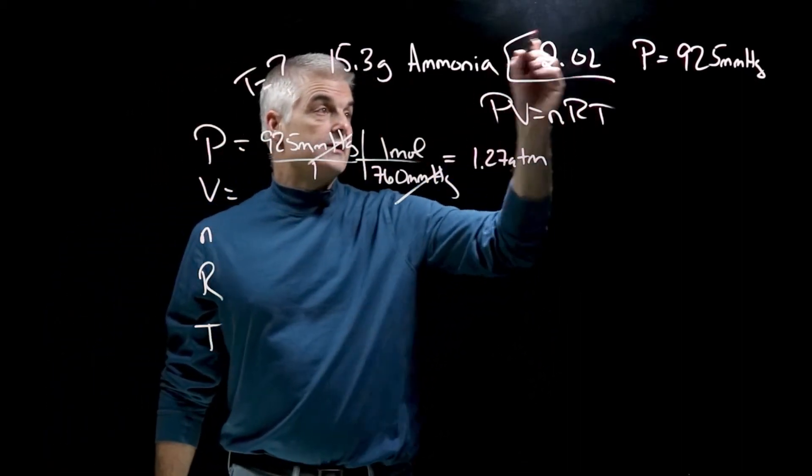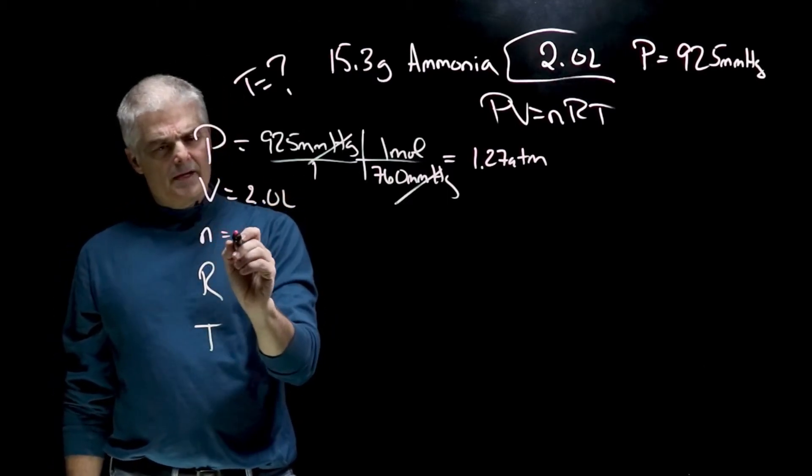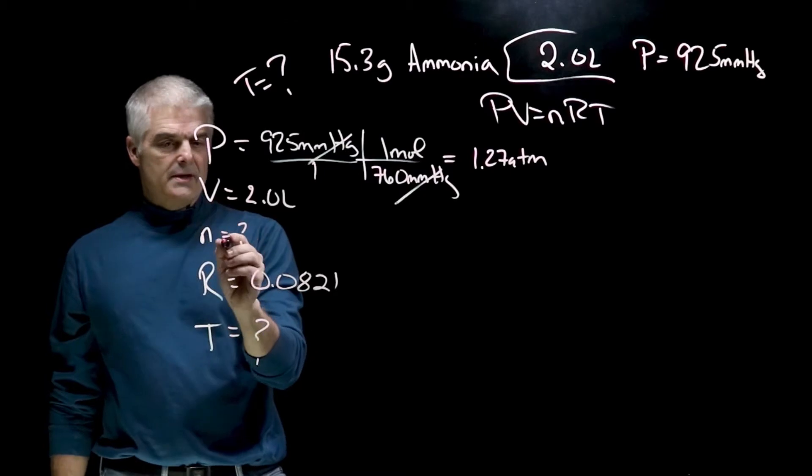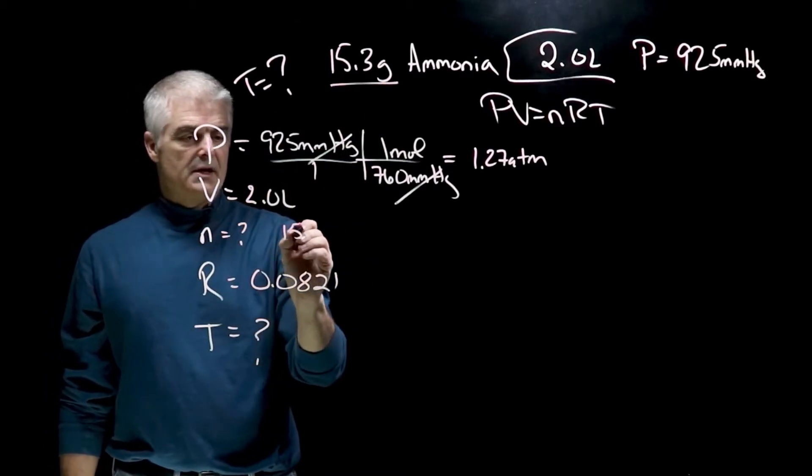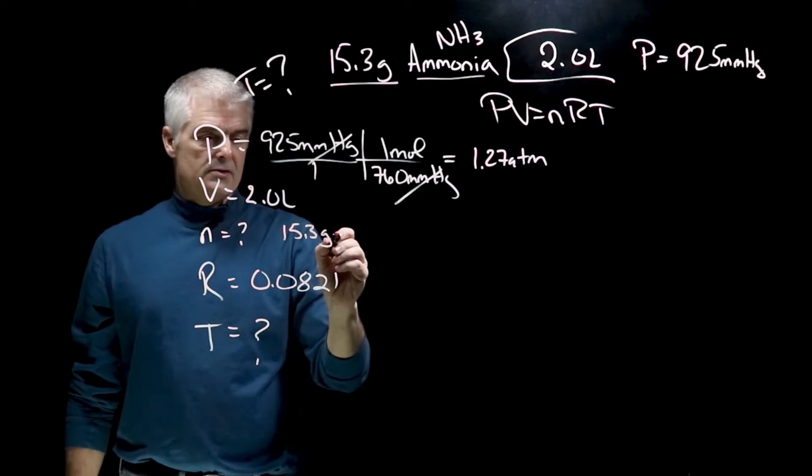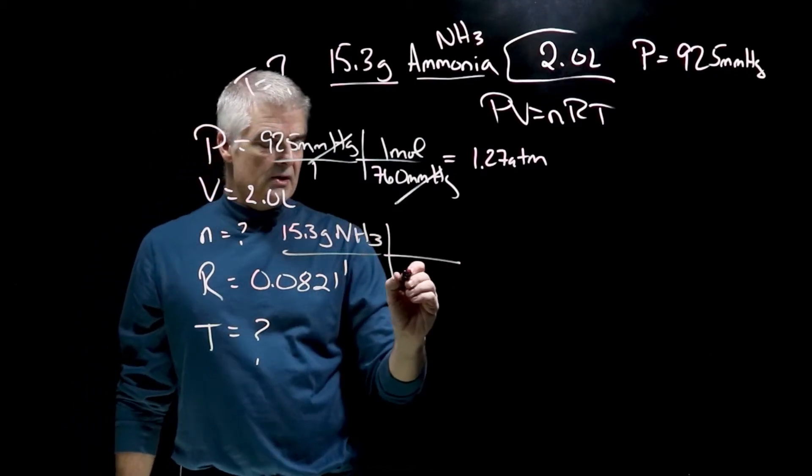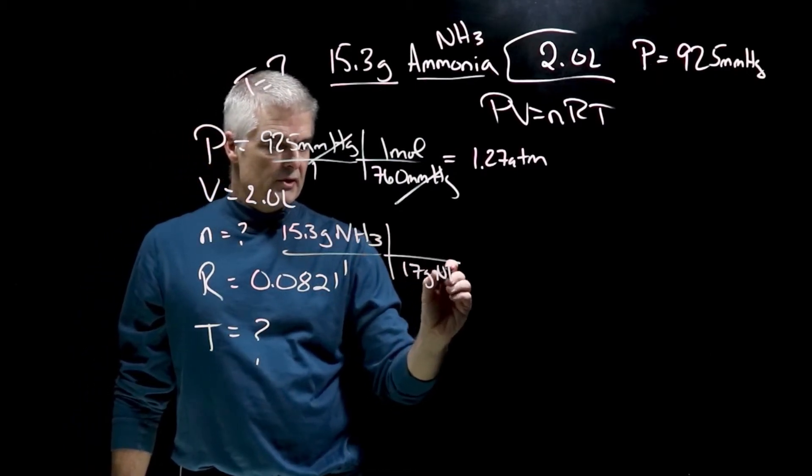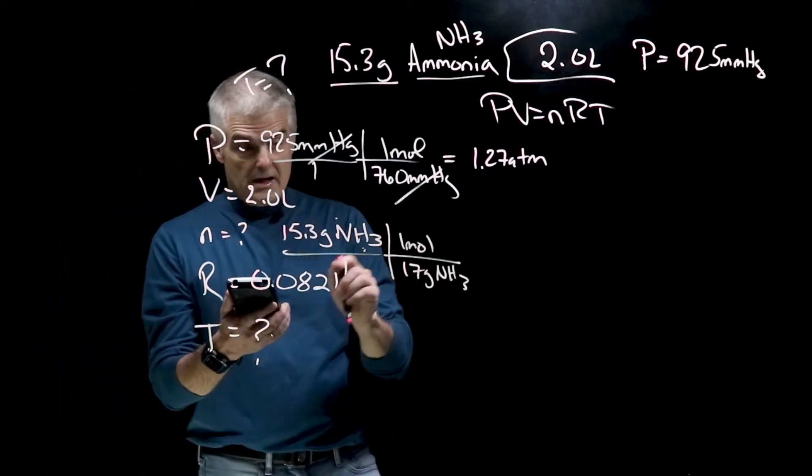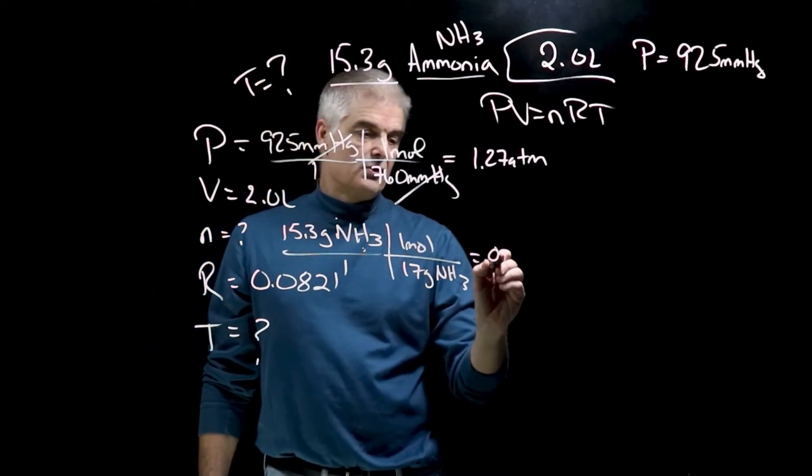Now my volume, there it is right there. So that's just 2.0 liters. It's in liters. I'm happy. The moles, I don't know that yet. Let's see. R, that's 0.0821. That's always the same number. And the temperature is the actual question mark. So N is moles, but I have this number, 15.3 grams. So I'm going to take 15.3 grams. Now you need to know ammonia, by the way, is NH3. So that's NH3. And that matters because you have to use the periodic table. I got to get from grams to moles. To get from grams to moles, you then say that there are 17 grams of ammonia in one mole of ammonia. How do I get that? Nitrogen weighs 14, hydrogen weighs 1 from the periodic table. So I'm going to take 15.3 divided by 17. So 15.3 divided by 17 is equal to 0.90 moles.